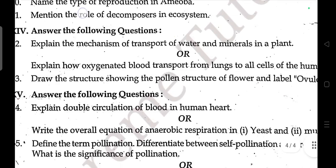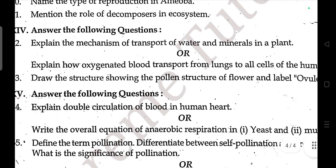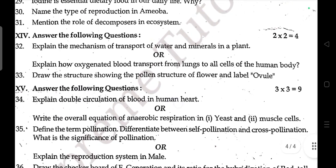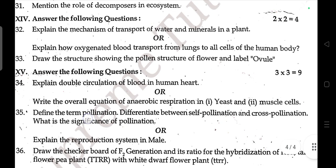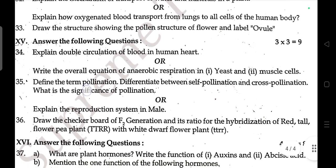Name the type of reproduction in amoeba. Mention the role of decomposers in an ecosystem. Explain the mechanism of transport of water and minerals in plants. Explain how oxygenated blood is transferred from lungs to all cells of the human body. Draw and label the structure of a flower showing the ovule.